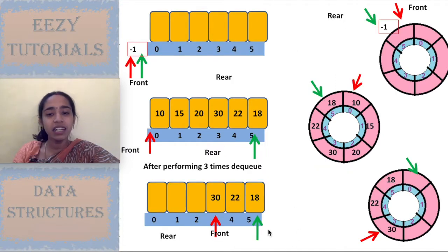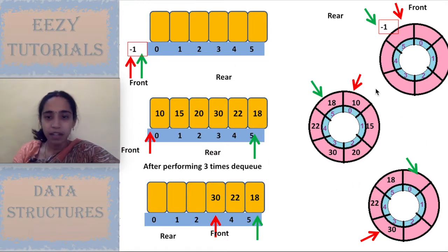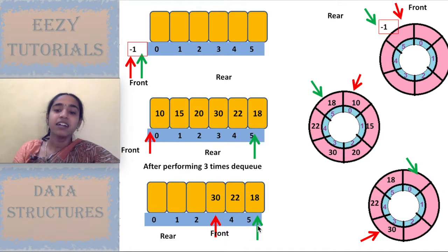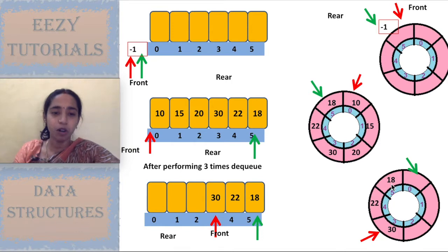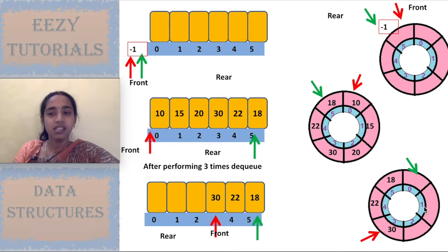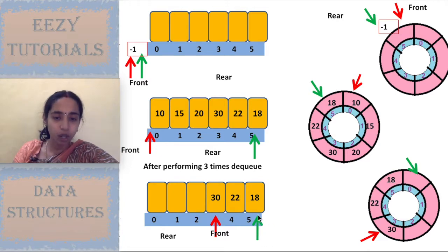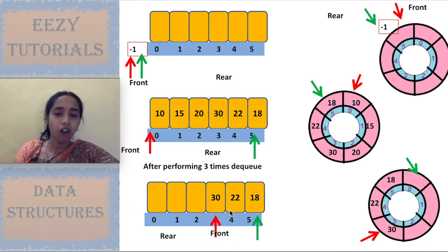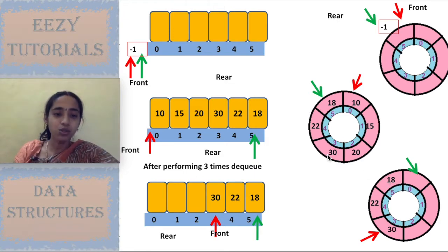After filling both queues and performing dequeue operations, trying to enqueue again shows the difference. In a linear queue, once the rear pointer reaches the size-minus-1 index, no further enqueue is allowed — even if space exists at the front. In a circular queue, that space is reused. Memory is efficiently used in a circular queue, whereas in a linear queue it is wasted — this is the major drawback of linear queue and the advantage of circular queue.